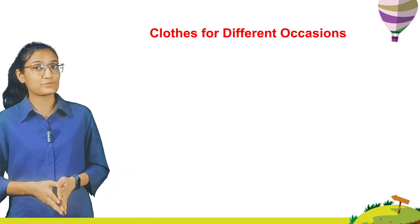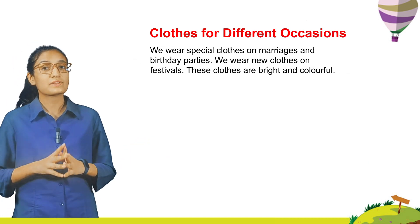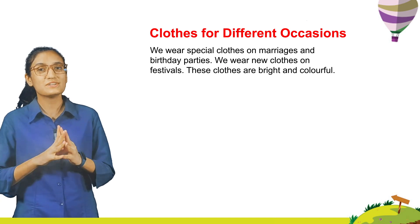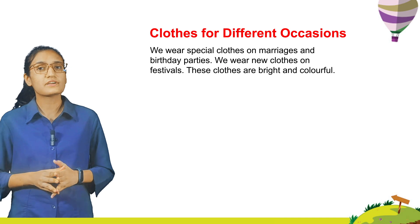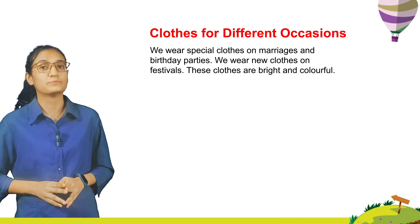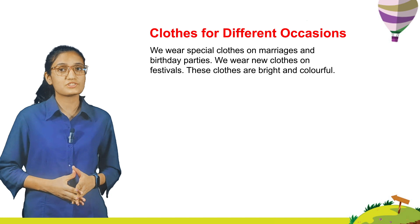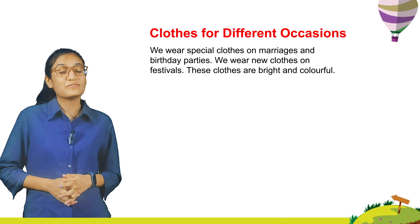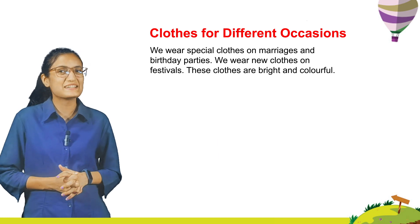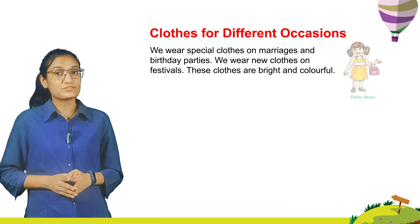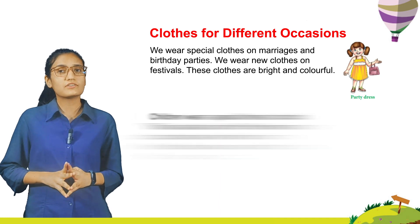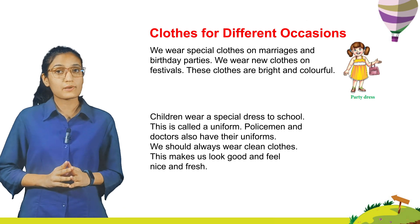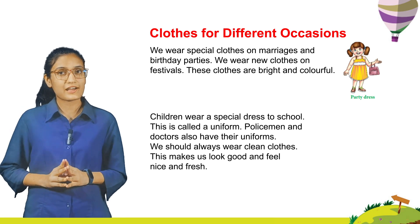Clothes for different occasions — we wear special clothes at marriages and birthday parties. We wear new clothes on festivals; these clothes are bright and colorful. Weddings aur different birthday occasions ke liye hum different clothes pehente hai jo bright and colorful hote hai. Here you can see the photos of party dress. Children wear a special dress to school called a uniform. Policemen and doctors also have their uniforms.